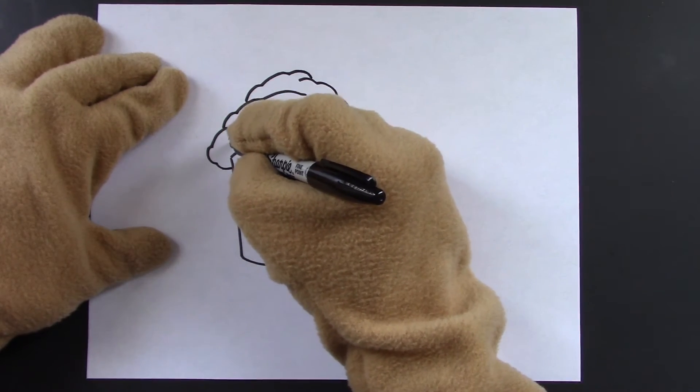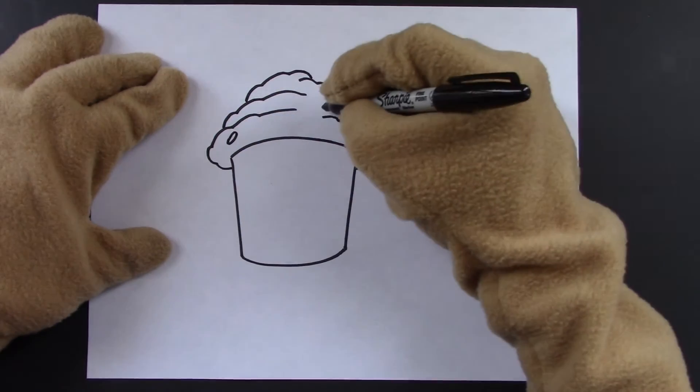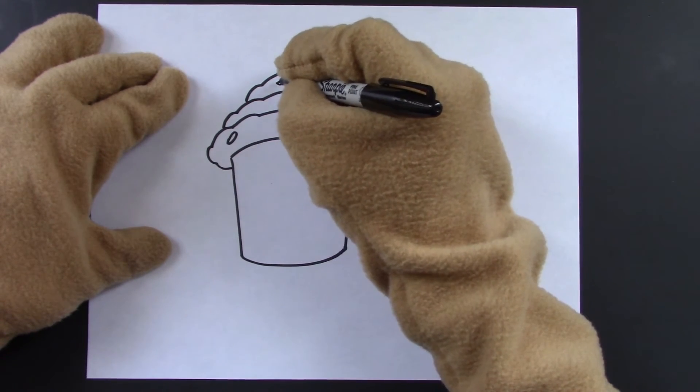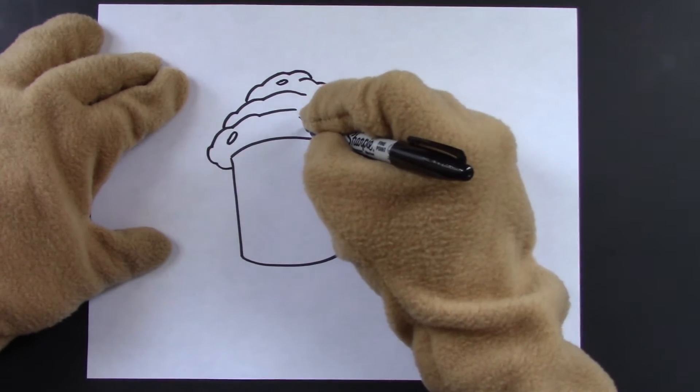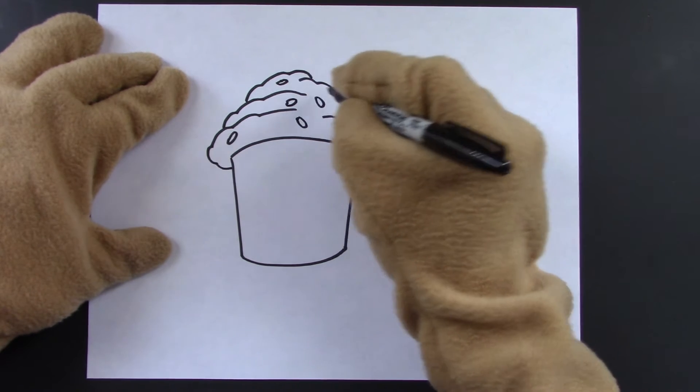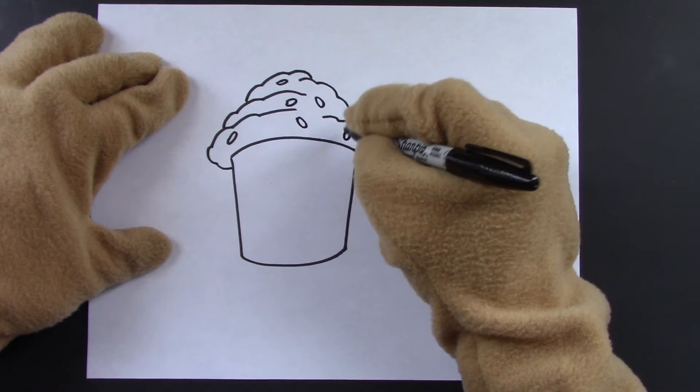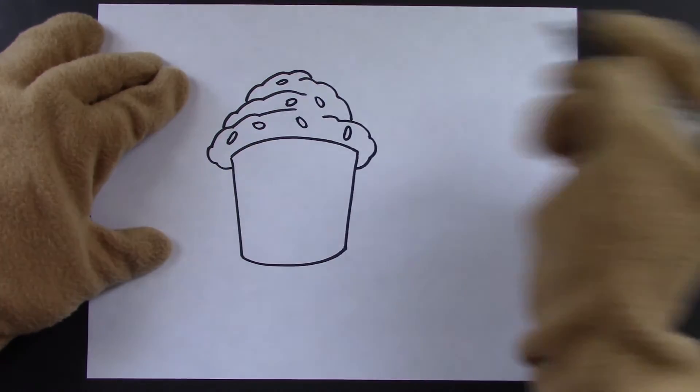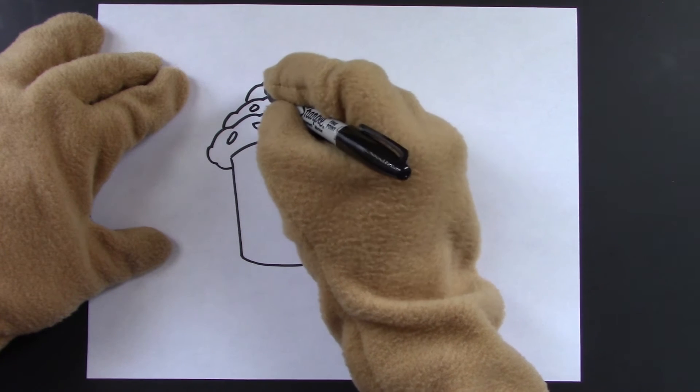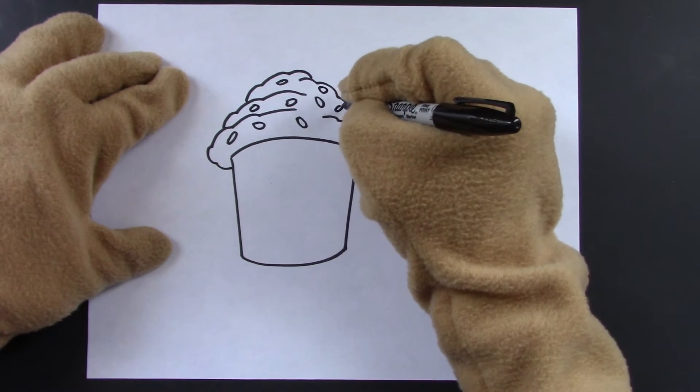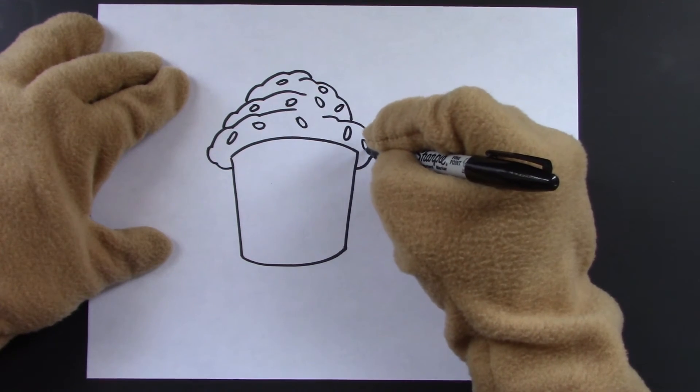Now we'll put on our sprinkles. Little oval shapes. They can be round or rectangular. And mix up the angles. And then place them here and there all over the frosting. If you like a lot of sprinkles, add a lot. Just keep doing it. There we go. That's nice.